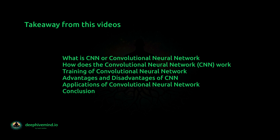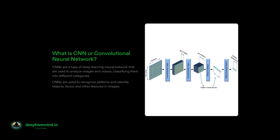So, without further ado, let me dive into today's video. What is CNN or convolutional neural network? CNN is a type of deep learning neural network that is designed to process and analyze visual data. It is commonly used for image and video recognition, object detection, and other computer vision tasks.